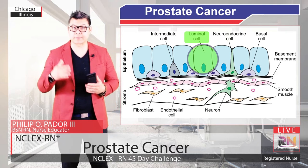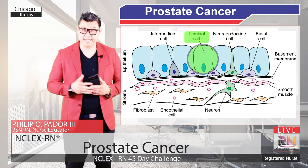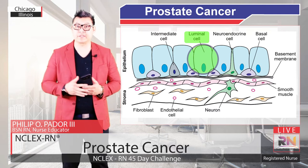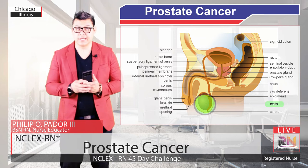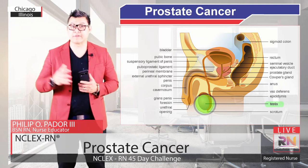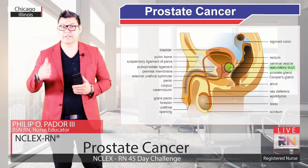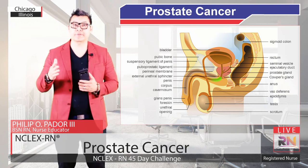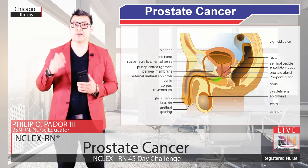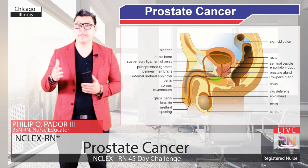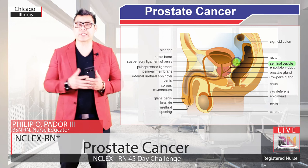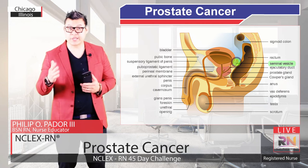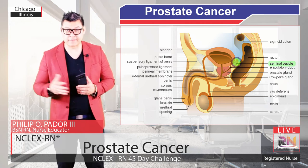Luminal cells secrete substances into the prostatic fluid that make it slightly alkaline, give it nutrients which nourish the sperm, and help it survive in the acidic environment of the vagina. During ejaculation, sperm leaves the testes, travels through the vas deferens into the ejaculatory ducts, and travels to the prostatic urethra. Smooth muscles in the prostate contract and push the prostatic fluid into the urethra where it joins the sperm as well as the semen, which is the fluid that comes from the seminal vesicles. The luminal cells also produce the prostate-specific antigen or PSA, which helps to liquefy the gel-like semen after ejaculation, thereby freeing the sperm to swim.